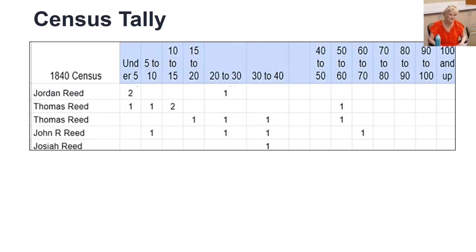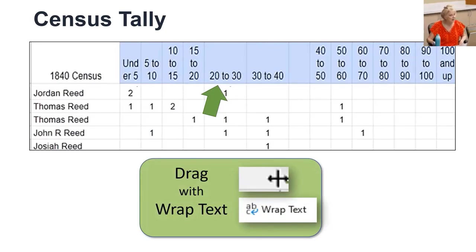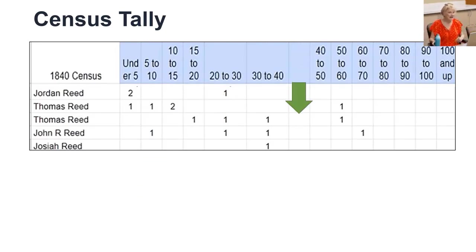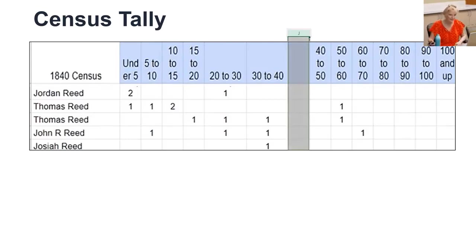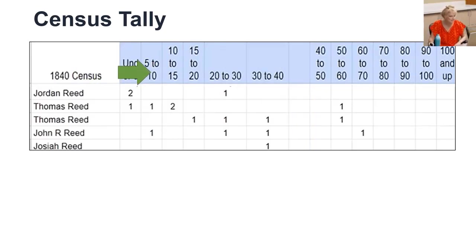I found a few fixes that would make this a better database. Notice they didn't wrap all the headers or make the columns the same width, which could be confusing — you know how to fix that: drag with wrap text. They also left a blank column, which tells Excel this is the end of the data — you know how to fix that too: click on the name of the column, then right-click and choose Cut or Delete. And they formatted the headers to appear at the bottom of the cell, making it hard to find the starting age. Let me show you how to improve that.